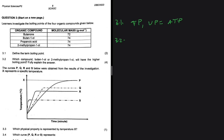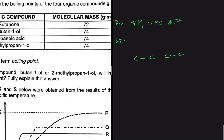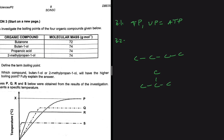For question 3.2: which compound, butan-1-ol or 2-methylpropan-1-ol, will have the higher boiling point? Fully explain your answer. Let's look at these two compounds and see how they differ. They're both alcohols, so they have the same kind of intermolecular forces — hydrogen bonding. But butan-1-ol has four carbons in a straight chain, while 2-methylpropan-1-ol has three carbons in a straight chain with a branch. They differ in branching.